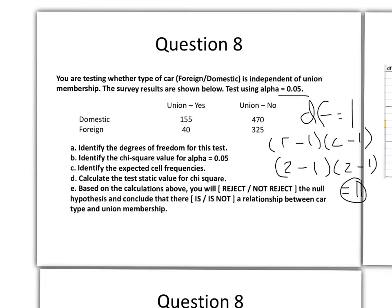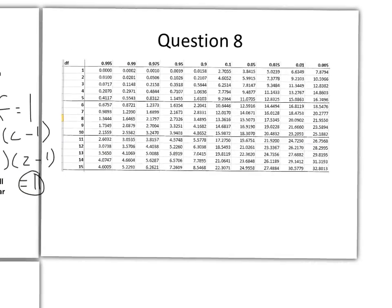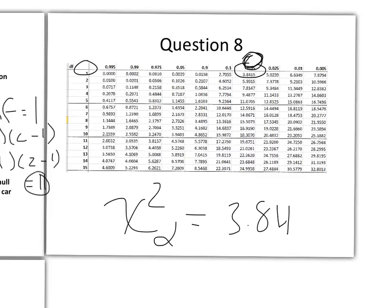And then we want to identify the chi-square value for alpha of 0.05. So if we move over here, alpha of 0.05, and then degrees of freedom of 1, so our chi-square of alpha will be 3.8415.